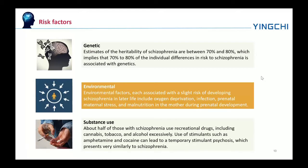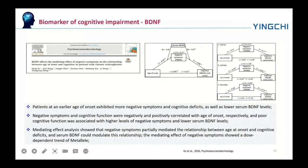Patients at an early age of onset exhibit more negative symptoms and cognitive deficits as well as lower serum BDNF levels. Negative symptoms and cognitive function were negatively and positively correlated with age of onset respectively. Poor cognitive function was associated with higher levels of negative symptoms and lower serum BDNF levels. Mediating effect analysis showed that negative symptoms partially mediated the relationship between age at onset and cognitive deficit, and serum BDNF could modulate this relationship.